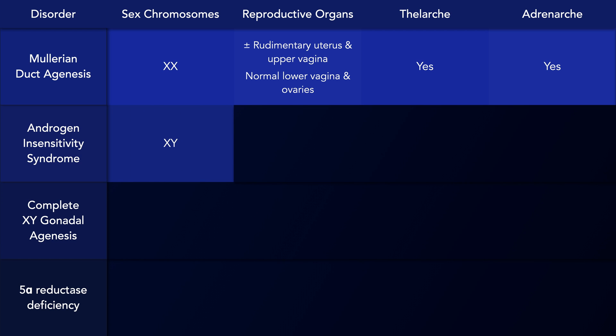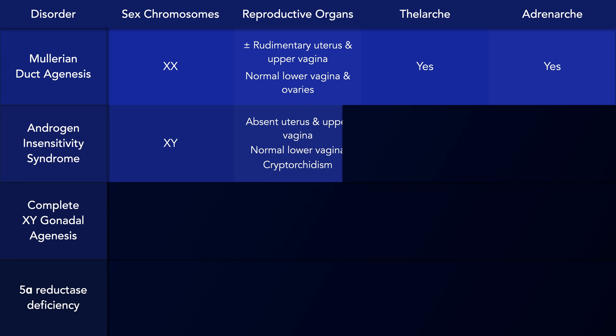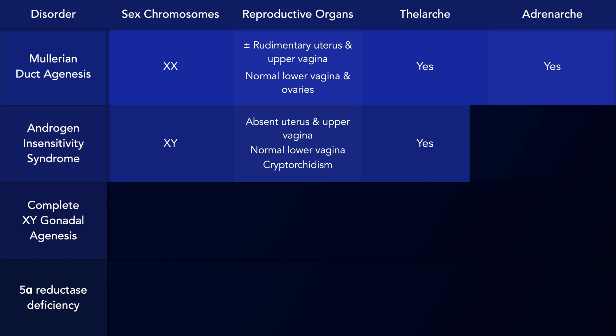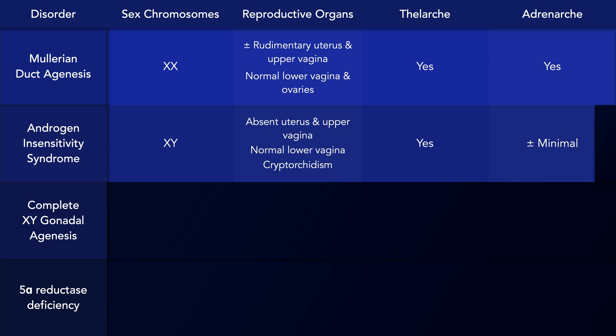With androgen insensitivity syndrome, the person's karyotype is 46XY. They develop a normal lower vagina, but not an upper vagina or uterus. As well, there is cryptorchidism. Thelarche occurs at puberty, but without hair growth in the axilla or pubic region.